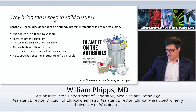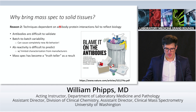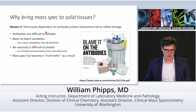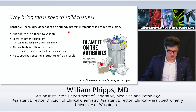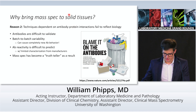The second reason is that our conventional techniques, largely dependent on antibody-protein interactions, can fail to reflect biology. The underlying issues are many: antibodies are very difficult to validate, there's a lot of batch-to-batch variability — one batch can show seemingly wholly new behavior compared to the next. Antibody cross-reactivity in general is difficult to predict, and often limited characterization has been done by manufacturers. As a result, mass spectrometry has become a truth-teller, and the more we probe it, the more we find that traditional assays are not performing as expected.